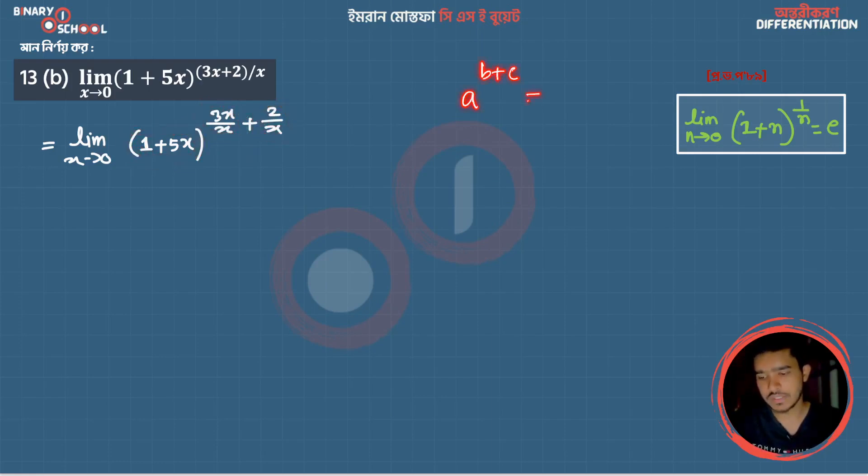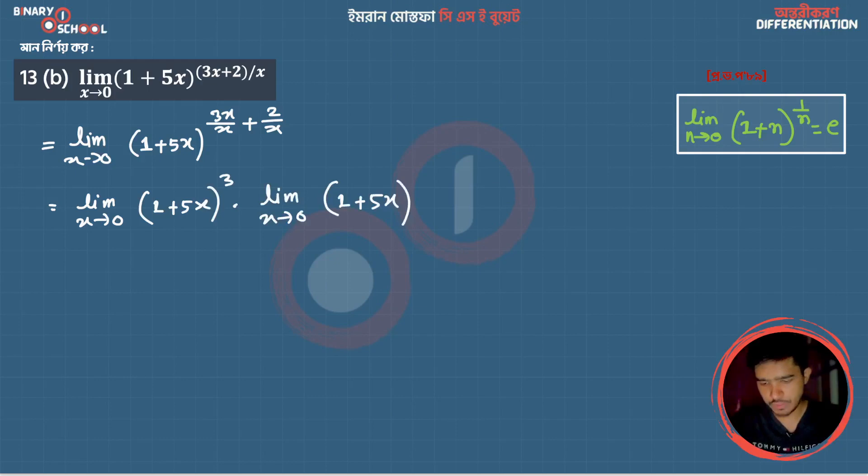So both the body: limit extends to 0, 1 plus 5x to the power 3, into limit extends to 0, 5x to the power 2 by x. The formula here is 1 plus n to the power 1 by n, which equals e.